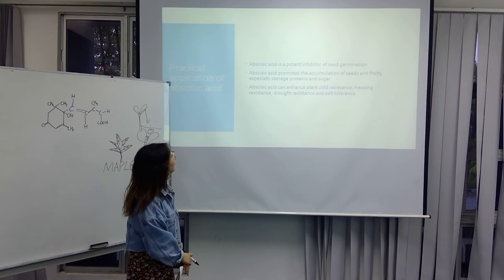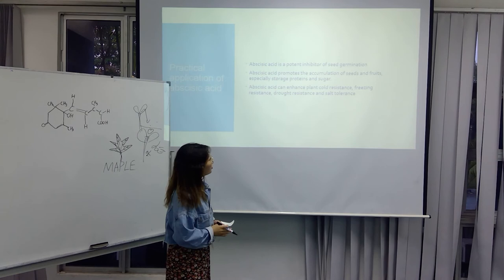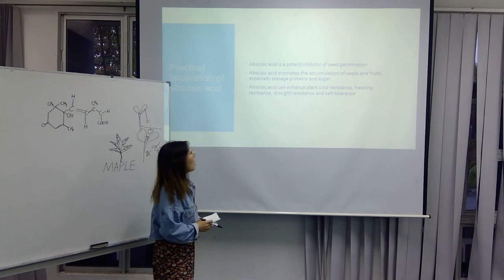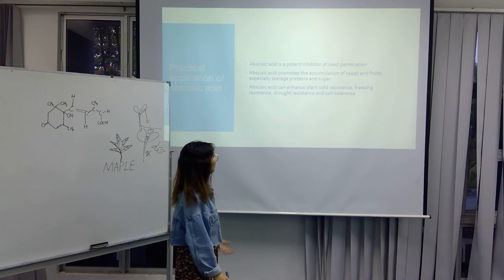So now the practical application of abscisic acid. Abscisic acid is a potent inhibitor of seed germination. Abscisic acid promotes the accumulation of seed and fruit, especially storage protein and sugar. Abscisic acid can enhance plant cold resistance, drought resistance, and salt tolerance.